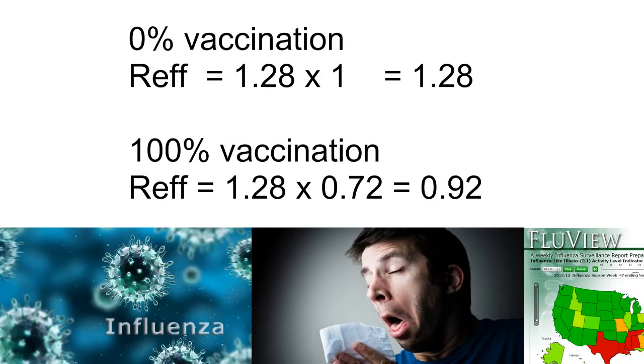At 0% vaccination, the effective reproductive rate is the product of the R sub-zero, 1.28, times 1, representing 100% susceptibles, producing an effective reproduction rate of 1.28, which represents epidemic growth of flu.